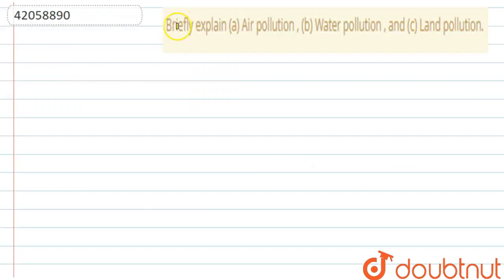Hello students, so the question is, briefly explain air pollution, water pollution and land pollution. So let us start with the first one, which is air pollution.